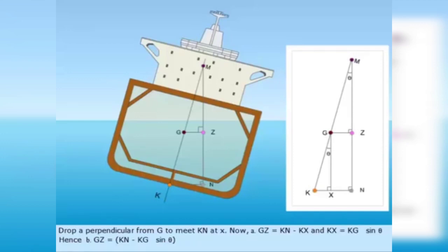Drop a perpendicular from G to meet KN at X. Now, GZ equals KN minus KX and KX equals KG sine theta. Hence, GZ equals KN minus KG sine theta.